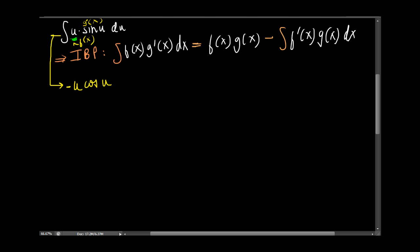And then minus the integral of f prime of x, which is 1, times g of x, which is again negative cosine of u. But I will write cosine of u and take the negative out and that cancels with the minus and this becomes a plus.